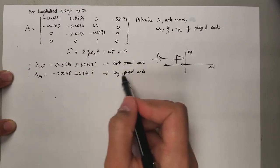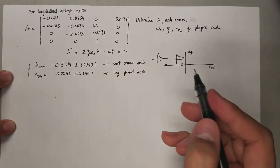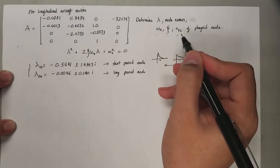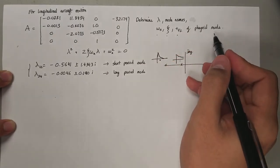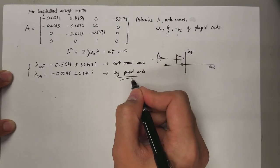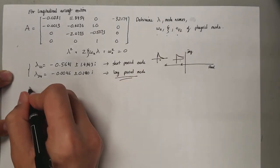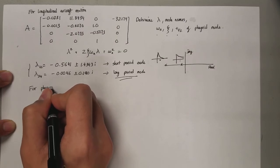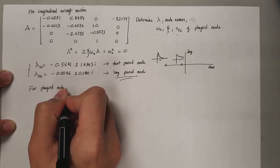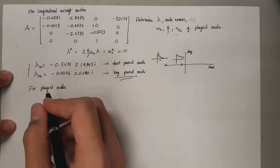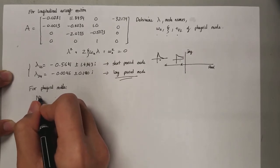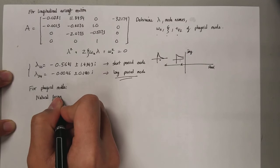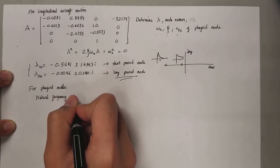The one with the less negative is going to be the long period. So you are asked to determine these three values of the phugoid mode, which is the long period. For phugoid, we're going to determine first of all the natural frequency, which is omega_n.